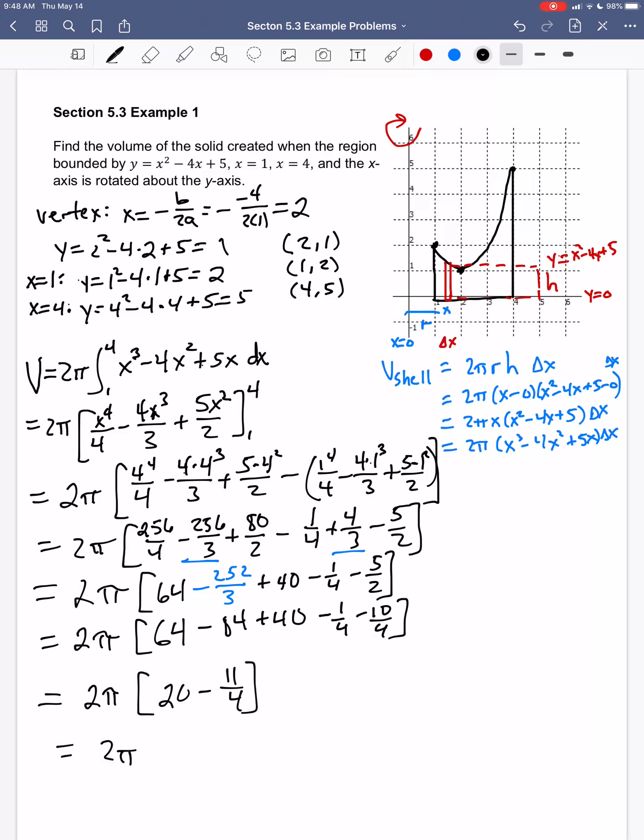So 20 would be 80 over 4. 80 minus 11 gives me 69 over 4. If I cancel the 2 and the 4, I will get a volume of 69 pi over 2. And so that's how this shell method works to find the volume of that solid.